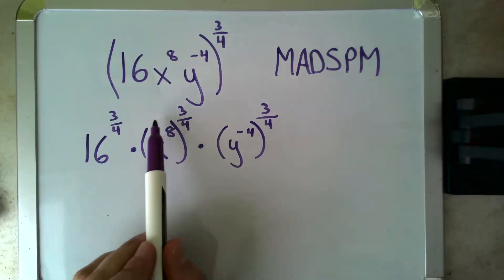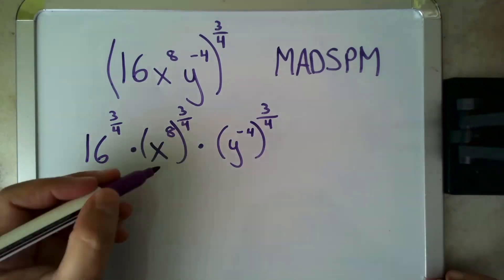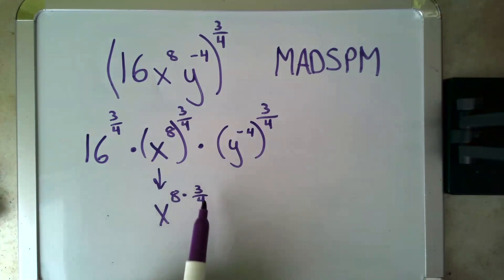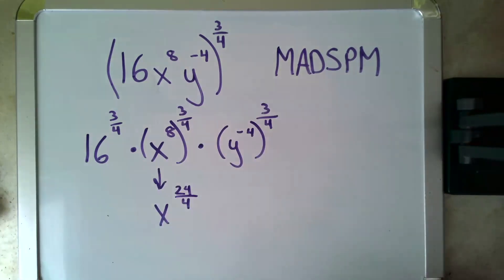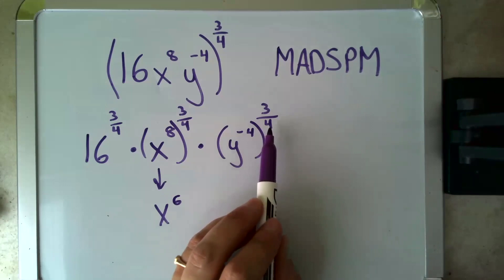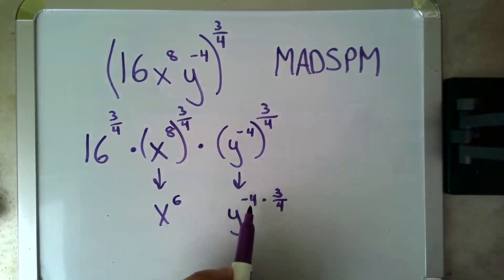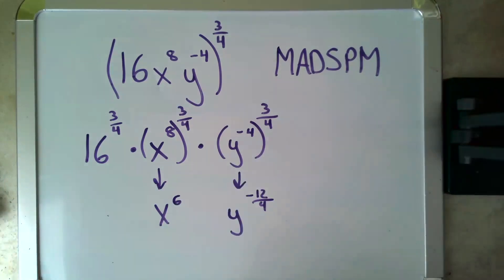Right now I am raising x to the eighth to the power of three-fourths, which means I multiply the exponents. So this becomes x to the eight times three-fourths, which is x to the 24/4, or x to the sixth. I do the same thing with y to the negative four to the three-fourths: multiply the exponents to get y to the negative four times three-fourths, which is y to the negative 12 over four, or y to the negative three. Those were multiplied up top, so they're multiplied in the result.